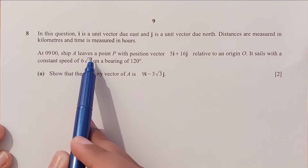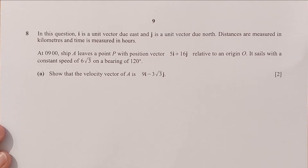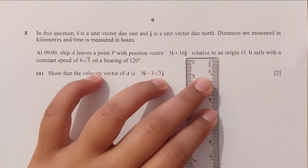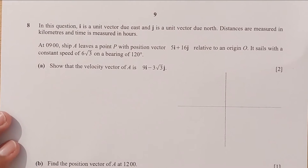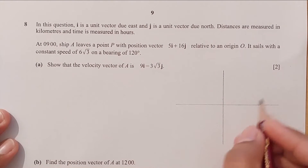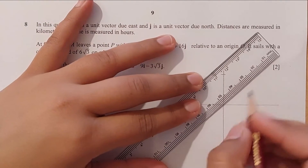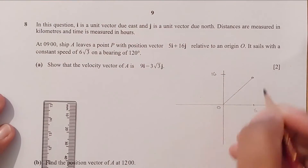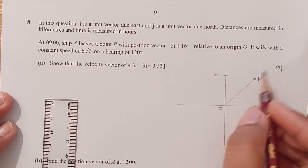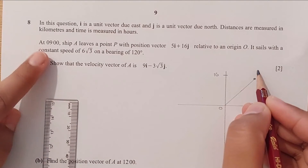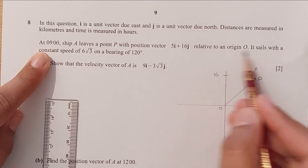At 9am, ship A leaves a point P with the position vector 5I plus 16J relative to the origin O. So the position vector of point P has X value 5 and Y value 16. This is the position vector OP relative to the origin. At 9 in the morning, ship A leaves point P that has a position vector of 5I plus 16J.